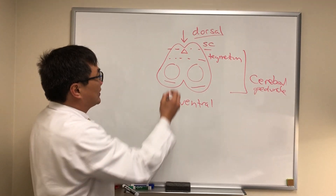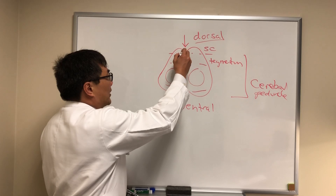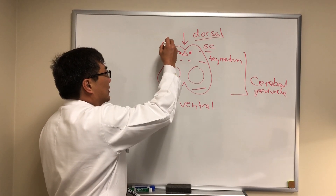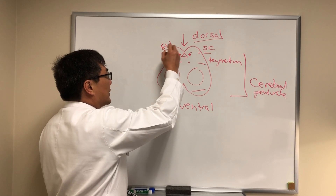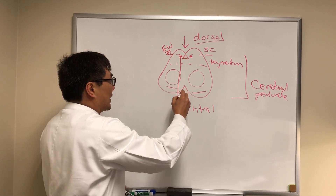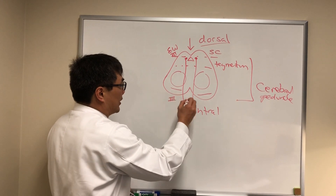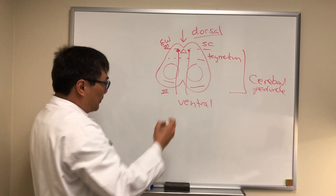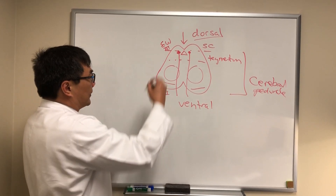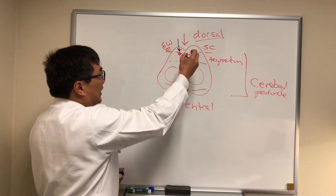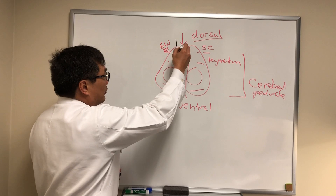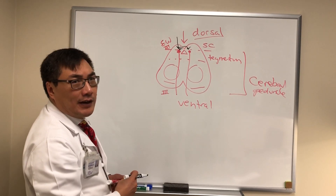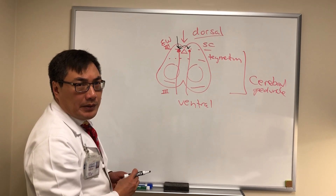When we have a dorsal midbrain lesion we can have involvement of the Edinger-Westphal nucleus of the third nerve, and that third nerve passes between the peduncles in the interpeduncular cistern. It is the input — both supranuclear input from above and input to both sides in the pre-tectal nuclei — that produces the constellation of findings associated with the dorsal midbrain syndrome.